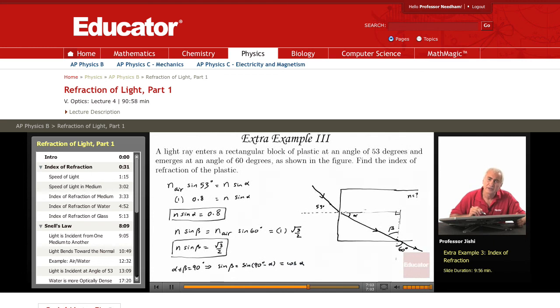So sine beta is cosine alpha. So now the second equation here becomes: n, instead of sine beta I can put cosine alpha, n cosine alpha is root 3 over 2. And here I have n sine alpha is 0.8. So what is n? Square both sides and add them up. So I get n² sin²(alpha) plus n² cos²(alpha).